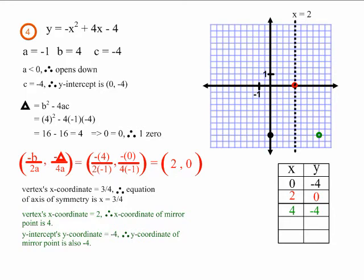In example 4, we have to find two extra points because our only zero is also our vertex, and therefore we only have 3 of the 5 points we need.